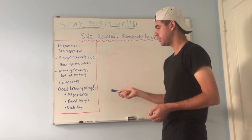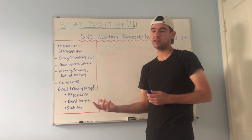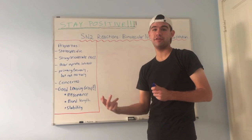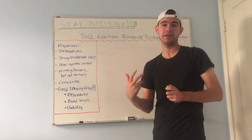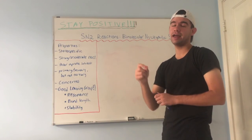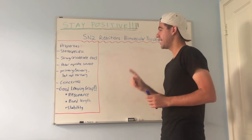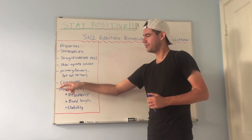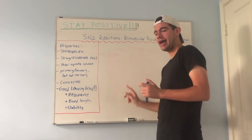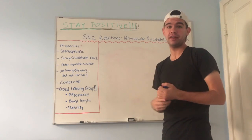The general rule is stability: if the leaving group is stable on its own after it leaves — either by resonance or any other factor — then it's typically a good leaving group. Fluorine attached to the electrophilic carbon will not leave because it's such a bad leaving group. One concept I should also mention: SN2 is concerted, meaning the attack of the nucleophile and the departure of the leaving group happen simultaneously in one step.